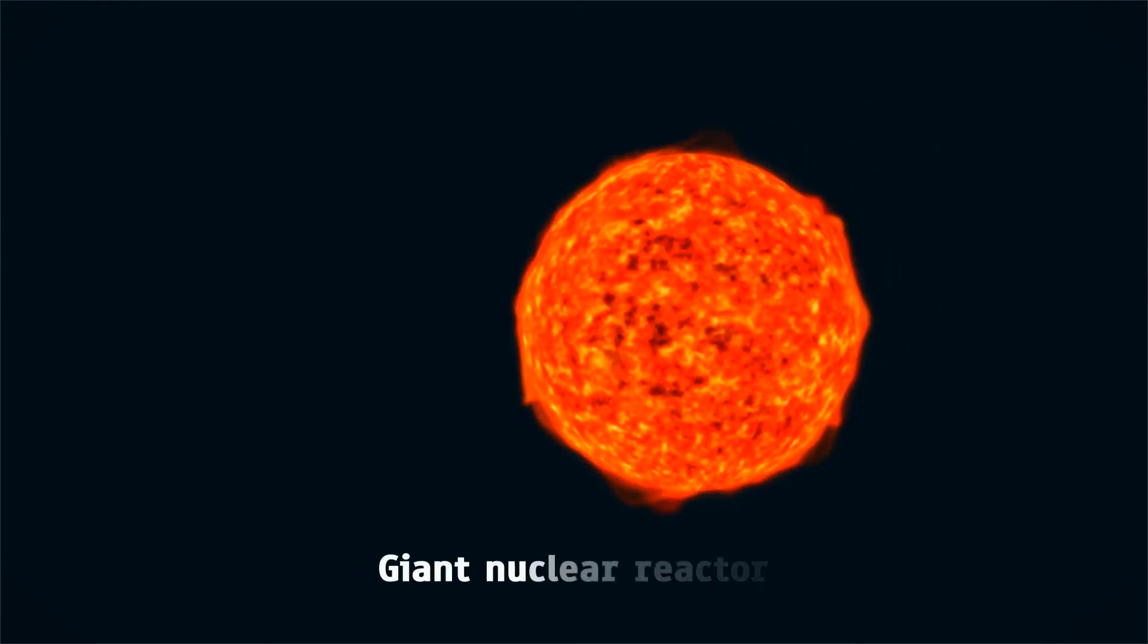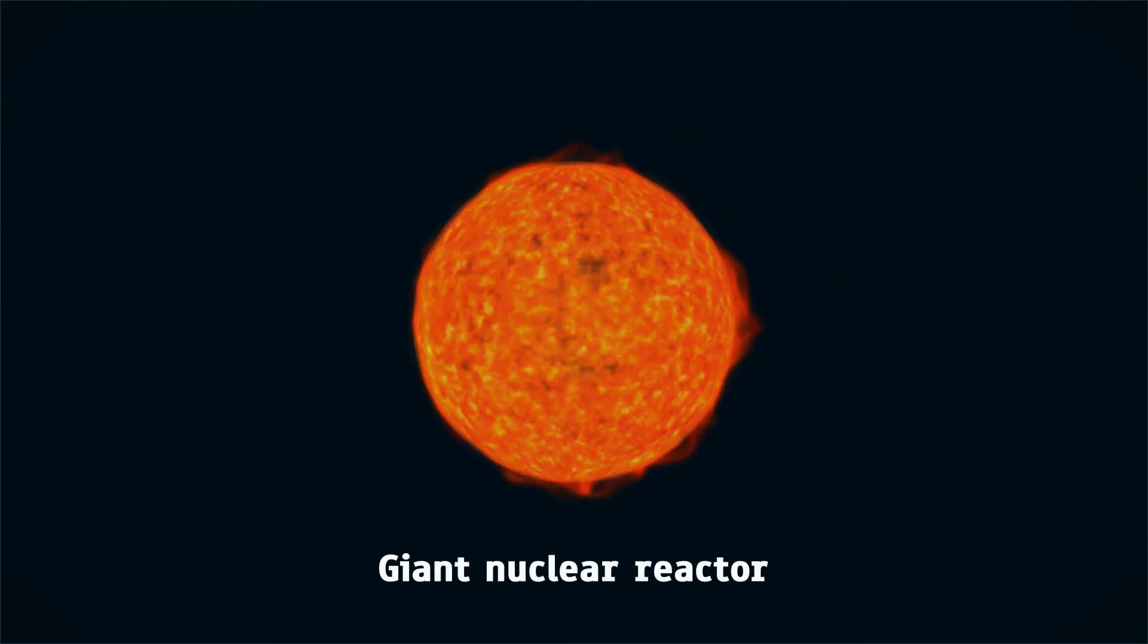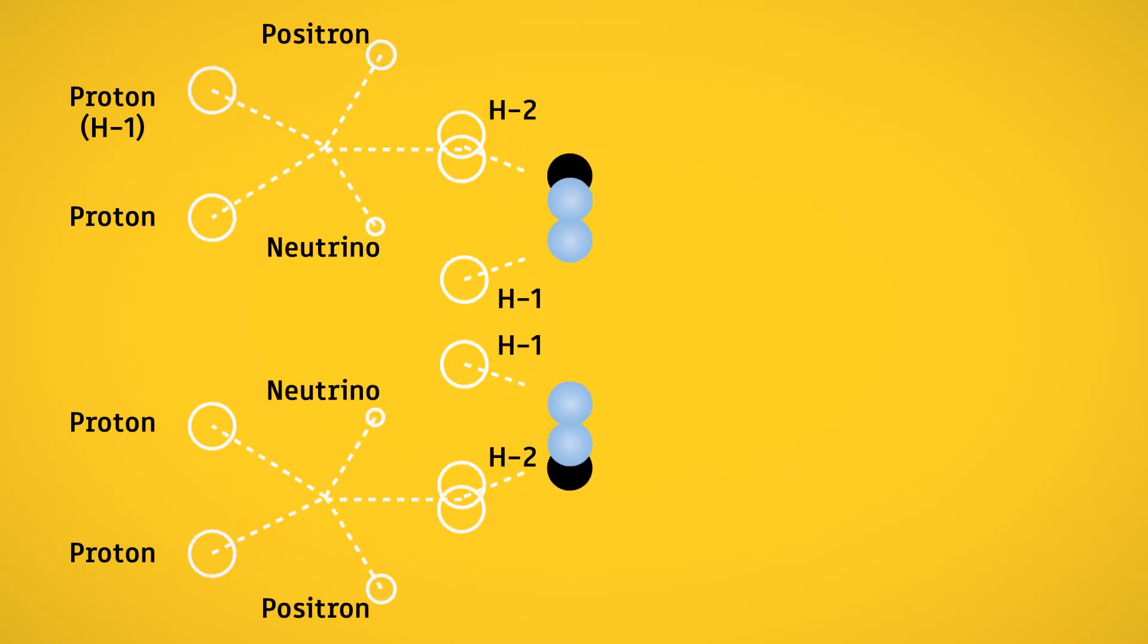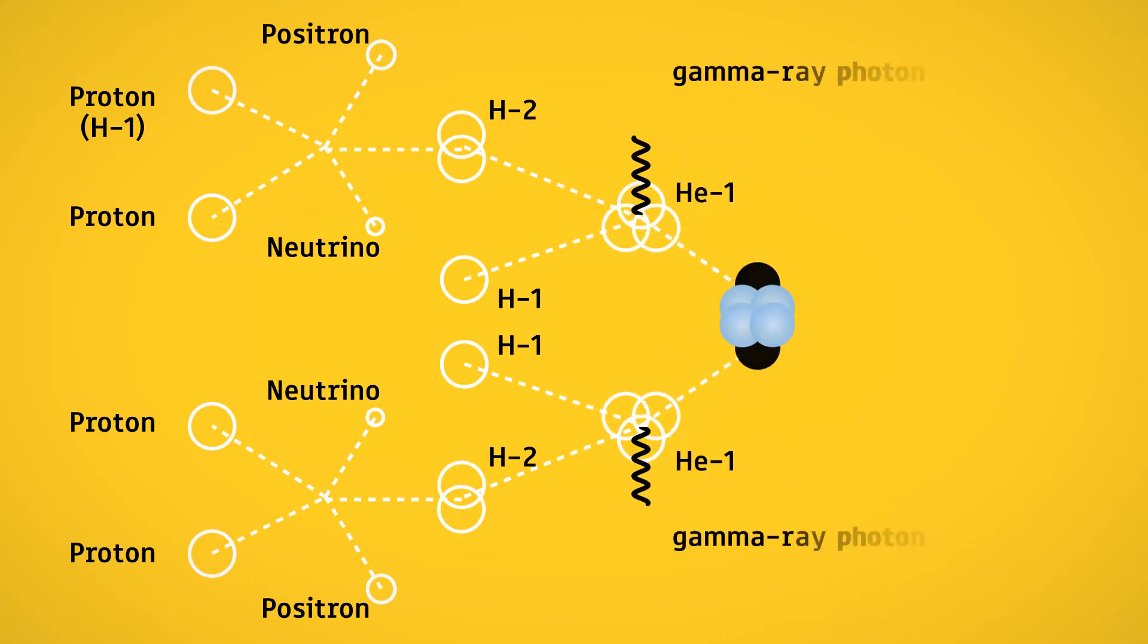Our sun is a giant nuclear reactor. In the core of the sun, hydrogen nuclei are continuously smashed together to form helium nuclei. Every time two hydrogen nuclei combine to make a helium nucleus, a photon is emitted.